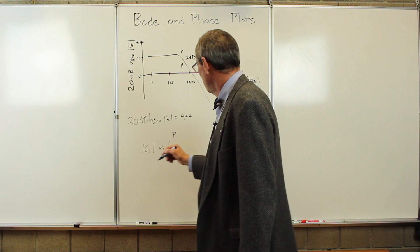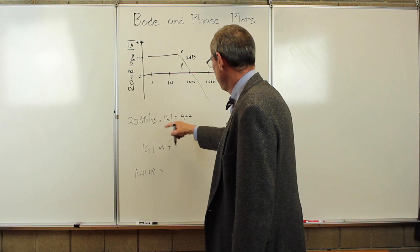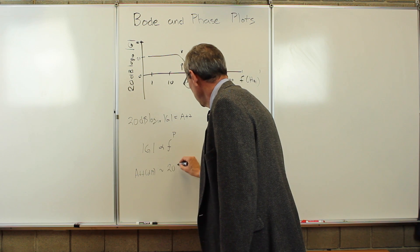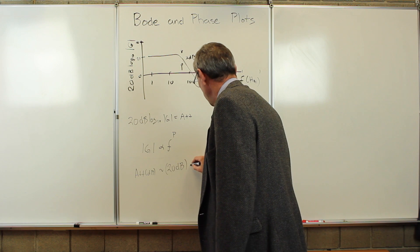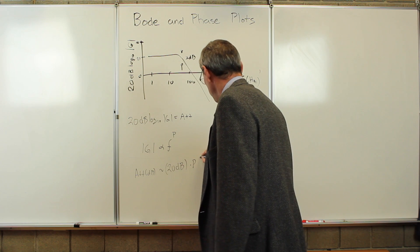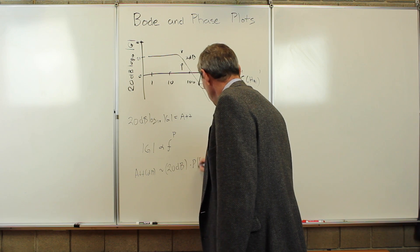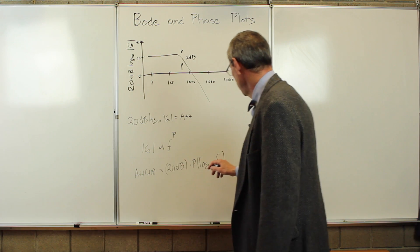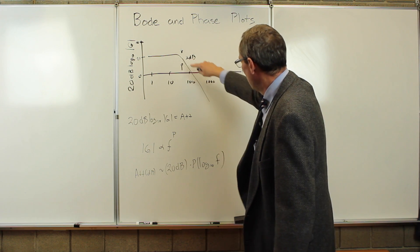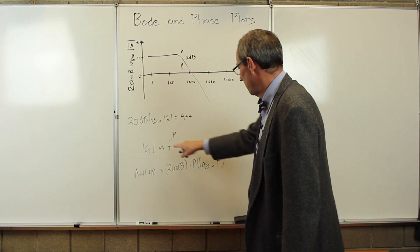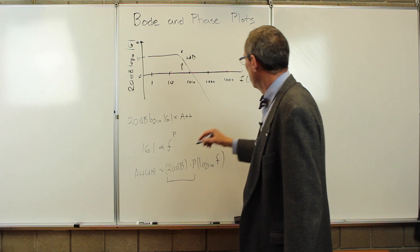Then the attenuation in decibels is going to go like, this p is going to come out, we're going to get 20 dB. Power can come out times the power times the log 10 of the frequency. So the attenuation is going to be linear in log 10. So a line on this corresponds to a power law and the slope is going to be 20 dB times that power.